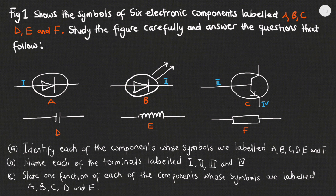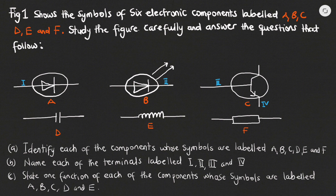Figure one shows the symbols of six electronic components labeled A, B, C, D, E, and F. We also have parts of the electrical components labeled with Roman numerals I, II, III, and IV. Part A of the question asks us to identify each of the components whose symbols are labeled A to F. Part B says to name each of the terminals labeled I through IV, and part C asks us to state one function of each of the components labeled A through E.